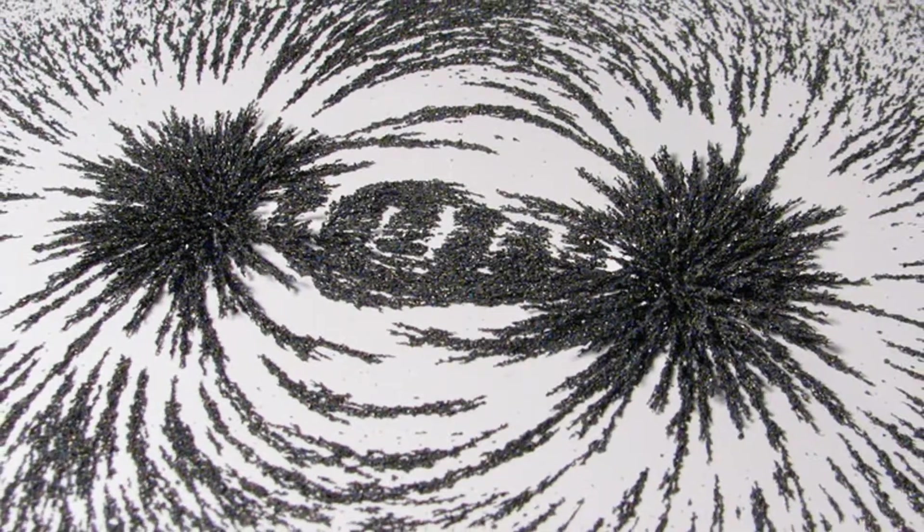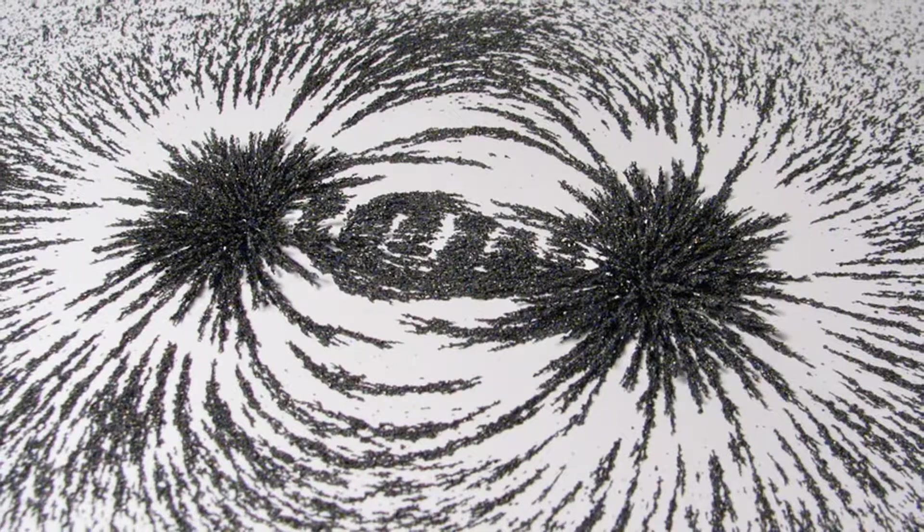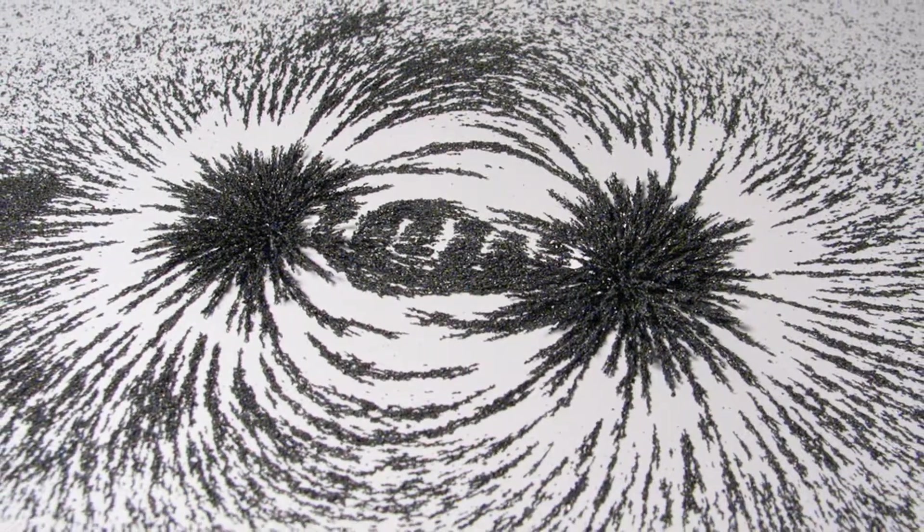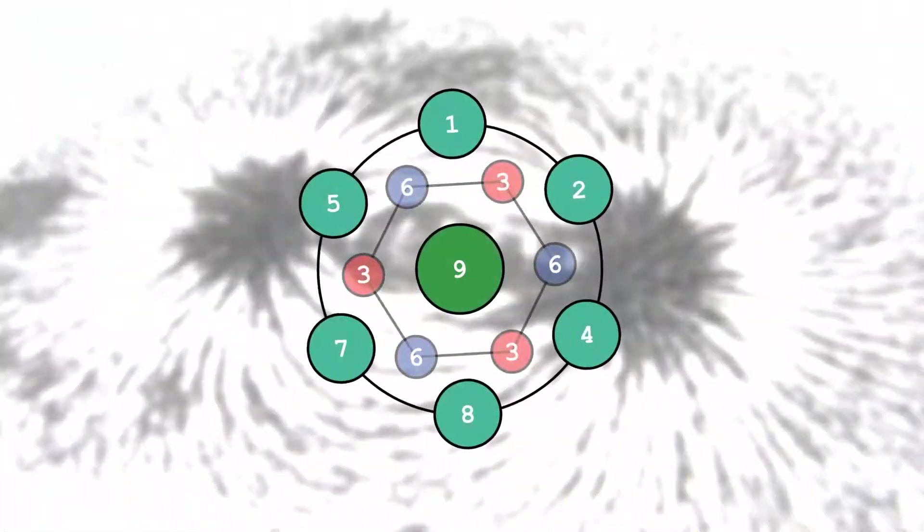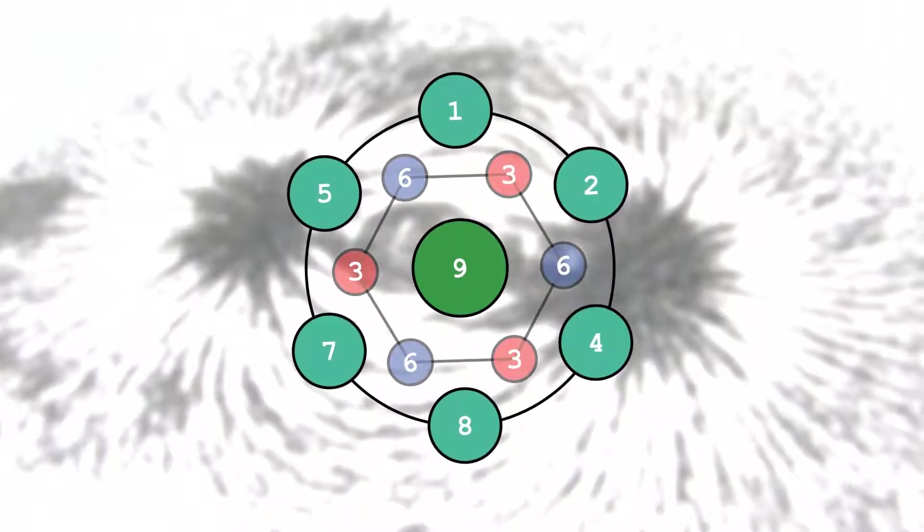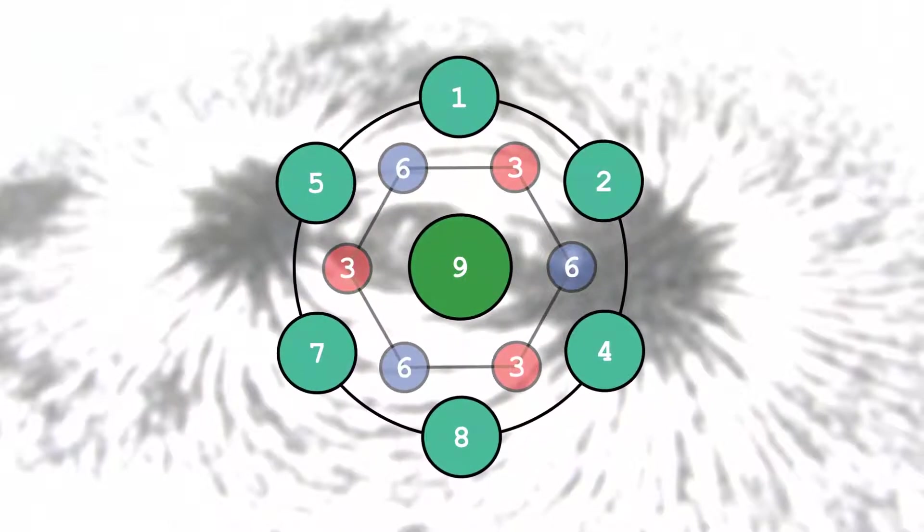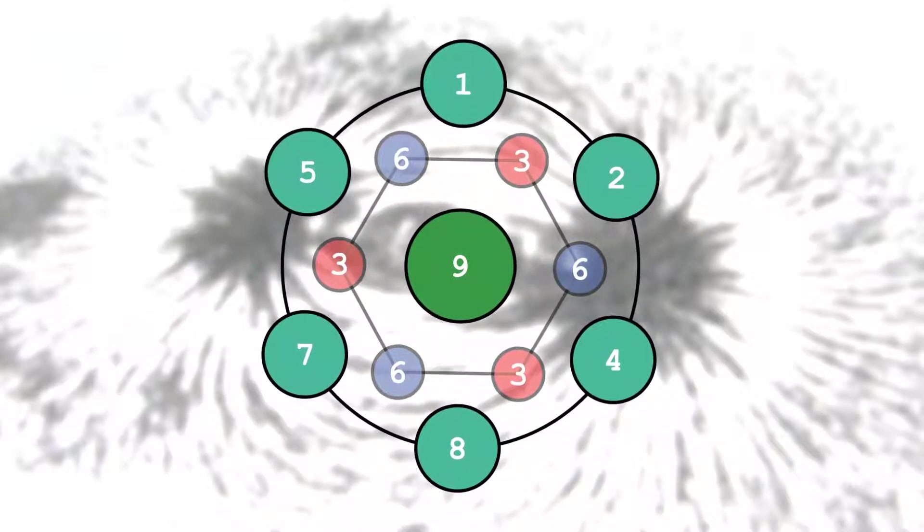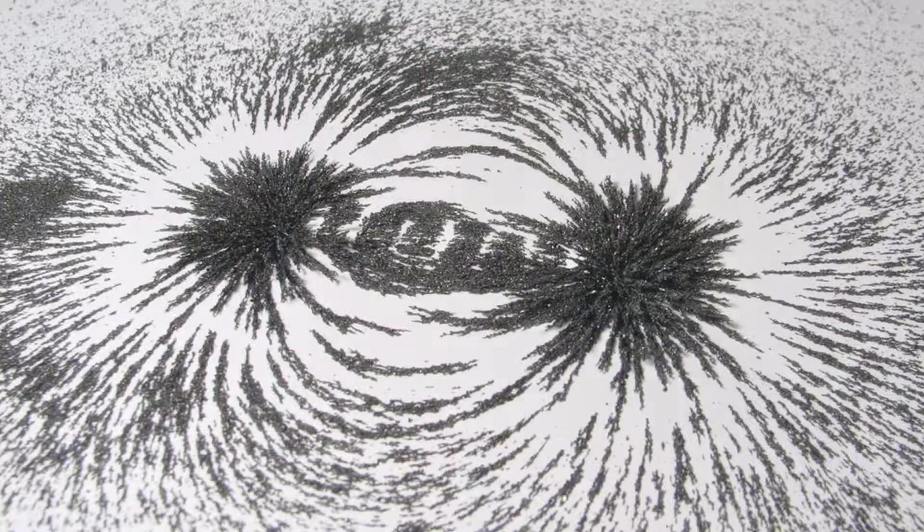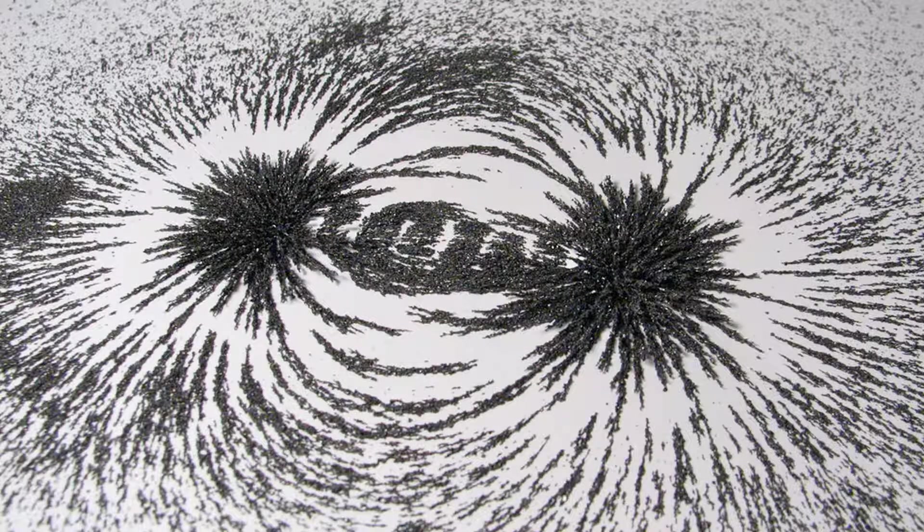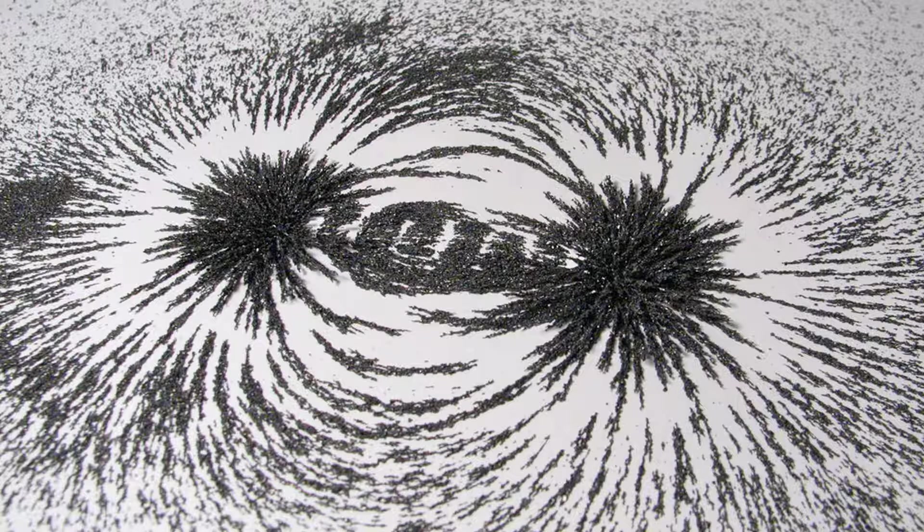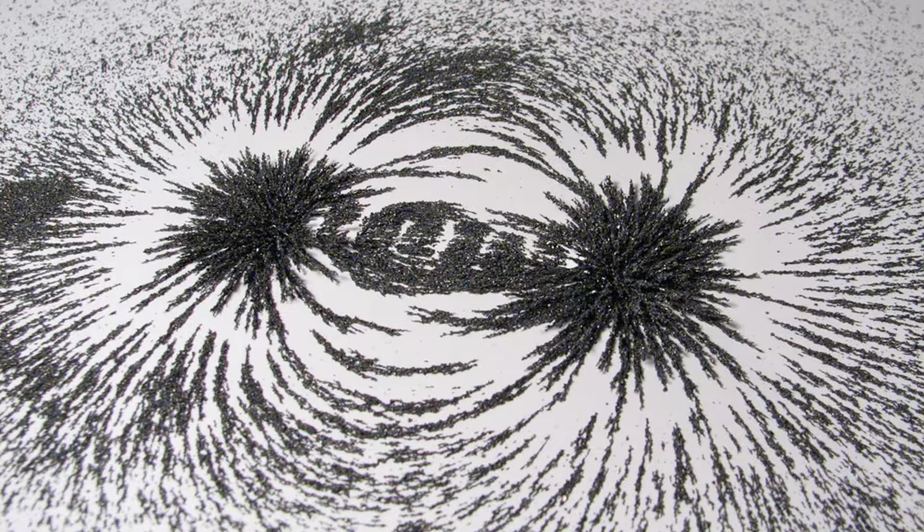So from this we have three and six representing our alternating poles and representing magnetism, which kind of makes sense because according to our number spiral, the threes and sixes are hidden. So magnetism is something you can't see. It's almost like magnetism is the hidden force, the hidden scaffolding that's holding everything else together.